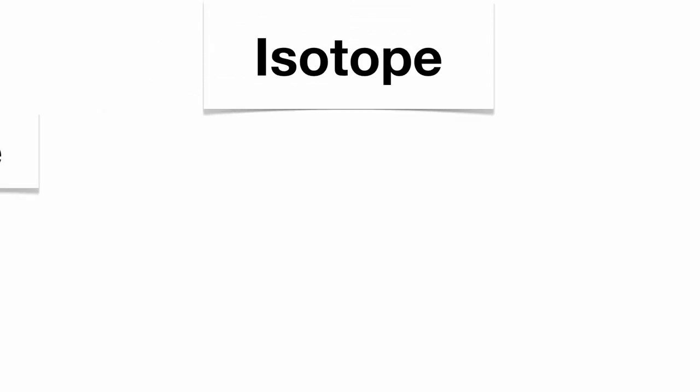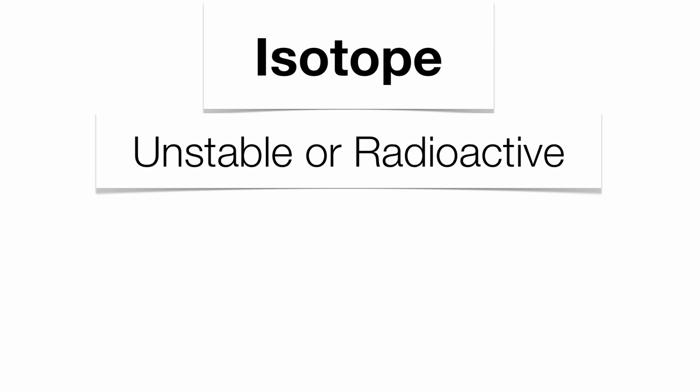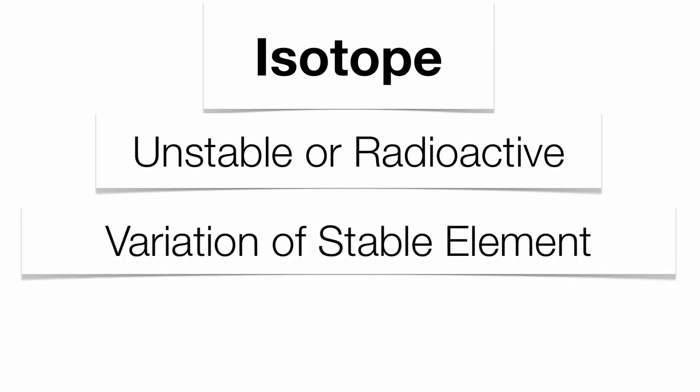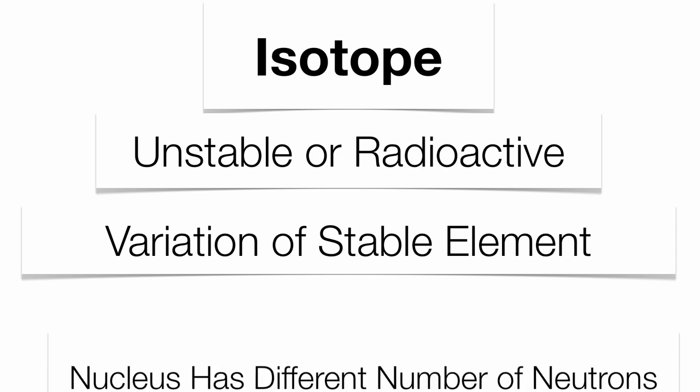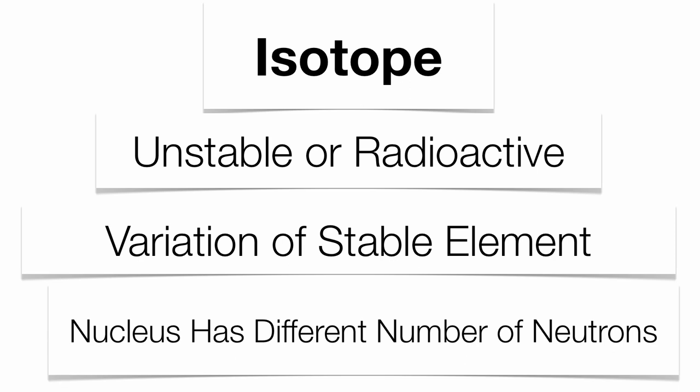An isotope is going to be an unstable or radioactive version of a stable element. The stable elements you're probably going to be pretty familiar with because they're going to be found on the periodic table of elements. The big difference between the element on the periodic table and an isotope is the nucleus has a different number of neutrons.